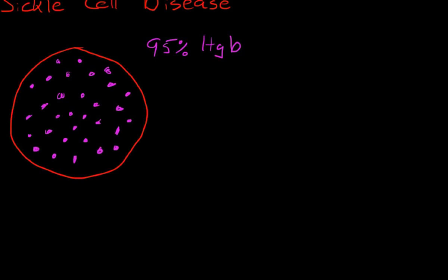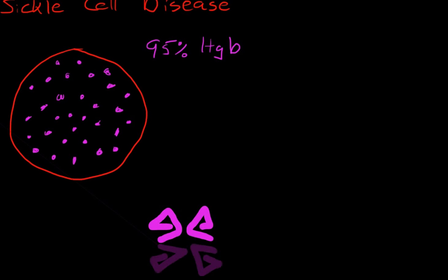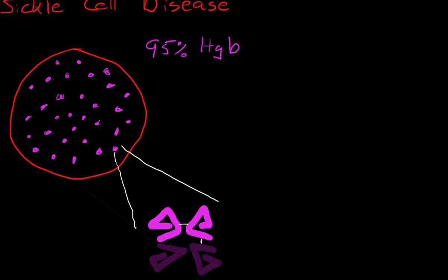Not surprisingly, sickle cell disease is a disease of a deformation of hemoglobin. Here I've drawn a picture of one single hemoglobin molecule. The hemoglobin molecule is made up of four polypeptide chains that make up the one protein. These have loose hydrogen bonding between them, so it makes a single protein molecule.